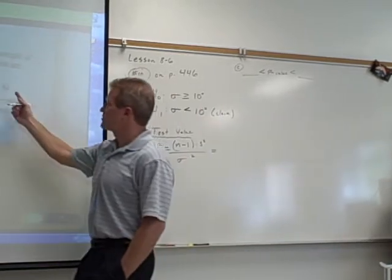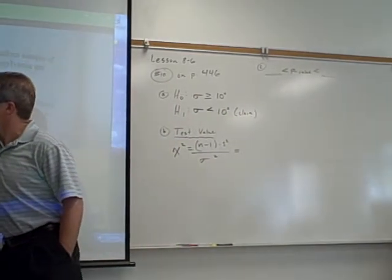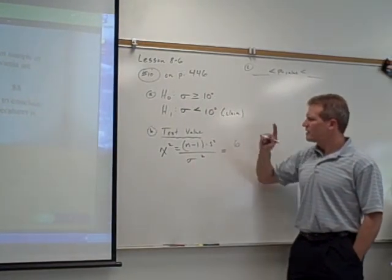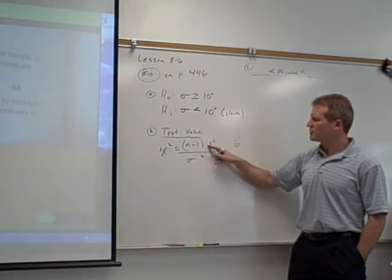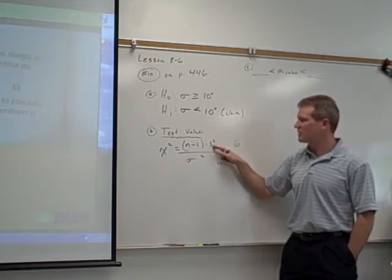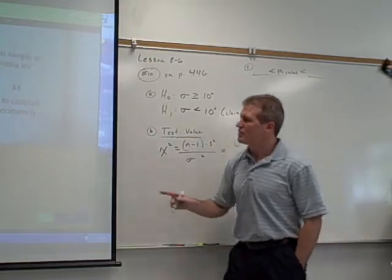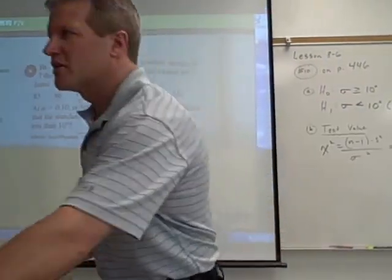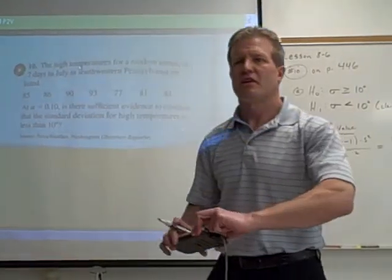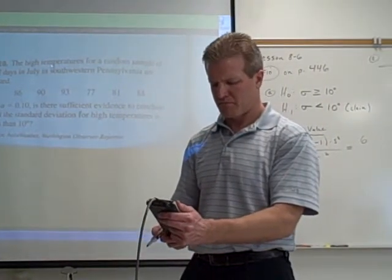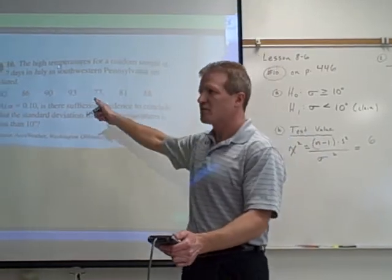So I count up my n, my n is my sample size: 1, 2, 3, 4, 5, 6, 7. So 7 minus 1 would be 6. This represents s-square as my sample variance, or I can think of it as my sample standard deviation squared. Now I don't know the standard deviation of these numbers. So what you'd have to do is take your calculator and push stat and then enter, and enter all these in a list.